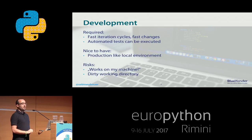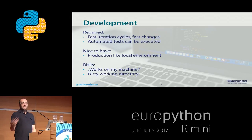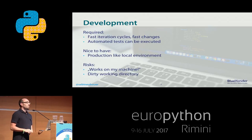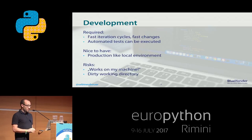We all know this: 'It works on my machine.' This is the typical problem on the developer's box — everything looked fine, but in the end production breaks. This also happens when we forget to commit a very important file, so in production it is missing. We have some kind of dirty working directory.